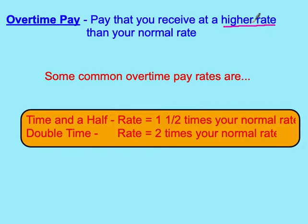Every job that has the opportunity for overtime pay will have different rules. Two very common ways to pay overtime are time and a half — meaning you take your normal rate times 1.5 — or double time, where you take your hourly rate and multiply it by two. These aren't the only ways to calculate overtime, but they are the most common.